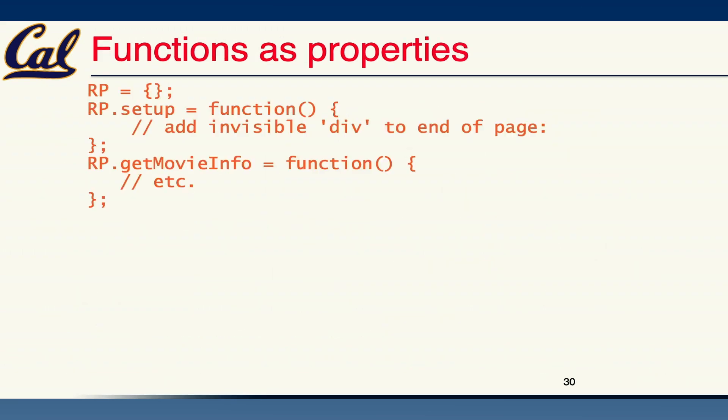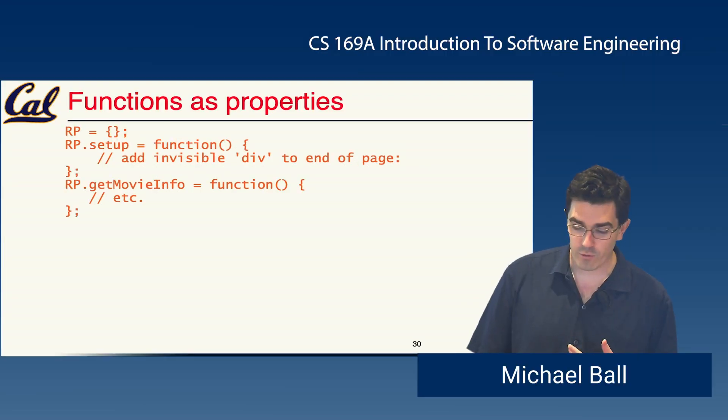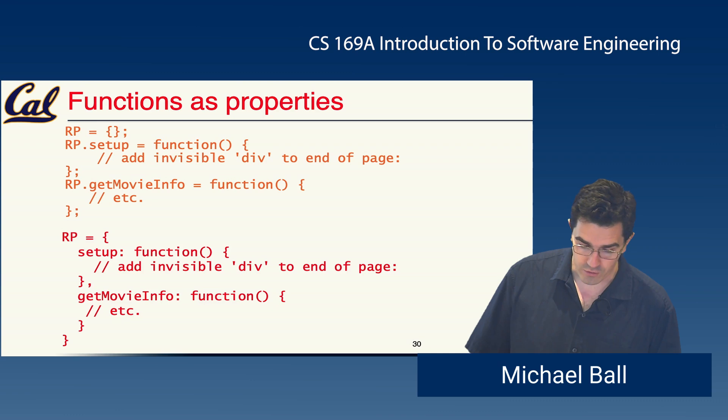Commonly when we structure code, we'll store functions as properties in an object to structure a sort of module of shared functionality. If I have an object here called RP, I might have a setup function, I might have a getMovieInfo function. Essentially what I'm doing is I'm just grouping related functions into a commonly defined object such that I'm aware of where that functionality lives. You would probably save this in a file called RP.js in the JavaScript folder of your Rails app, and you might similarly have a movies.js file or something else.